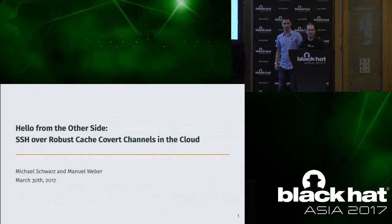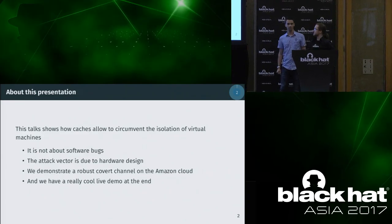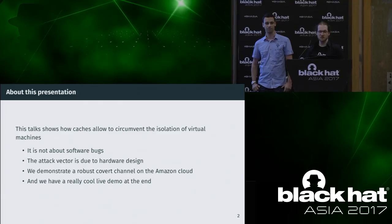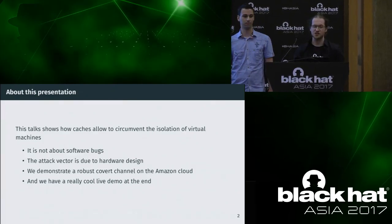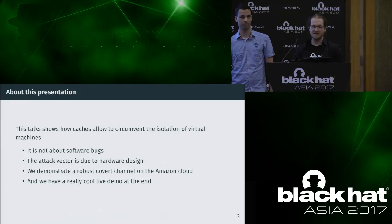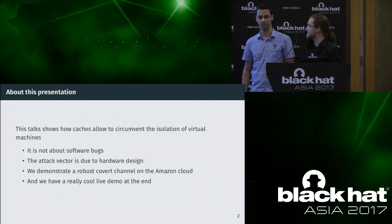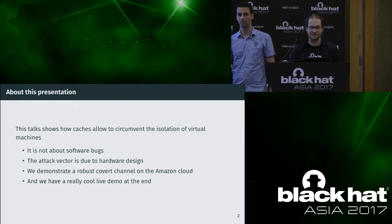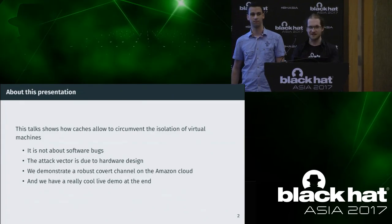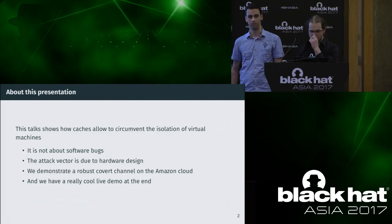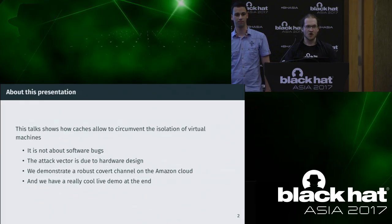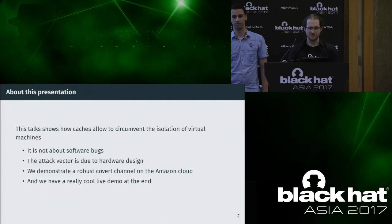Hello and welcome to our talk, 'Hello from the Other Side: SSH Over Robust Cache Covert Channels in the Cloud.' This talk will show you how you can use caches to circumvent the isolation of virtual machines. It's not about software bugs — software bugs can be patched easily. More importantly, we're showing an attack vector due to the hardware design of modern Intel CPUs. It's really hard to replace a CPU, which makes this even more impactful. We will demonstrate how you can use our robust covert channel on the Amazon cloud, and yes, we do have a really cool live demo at the end.